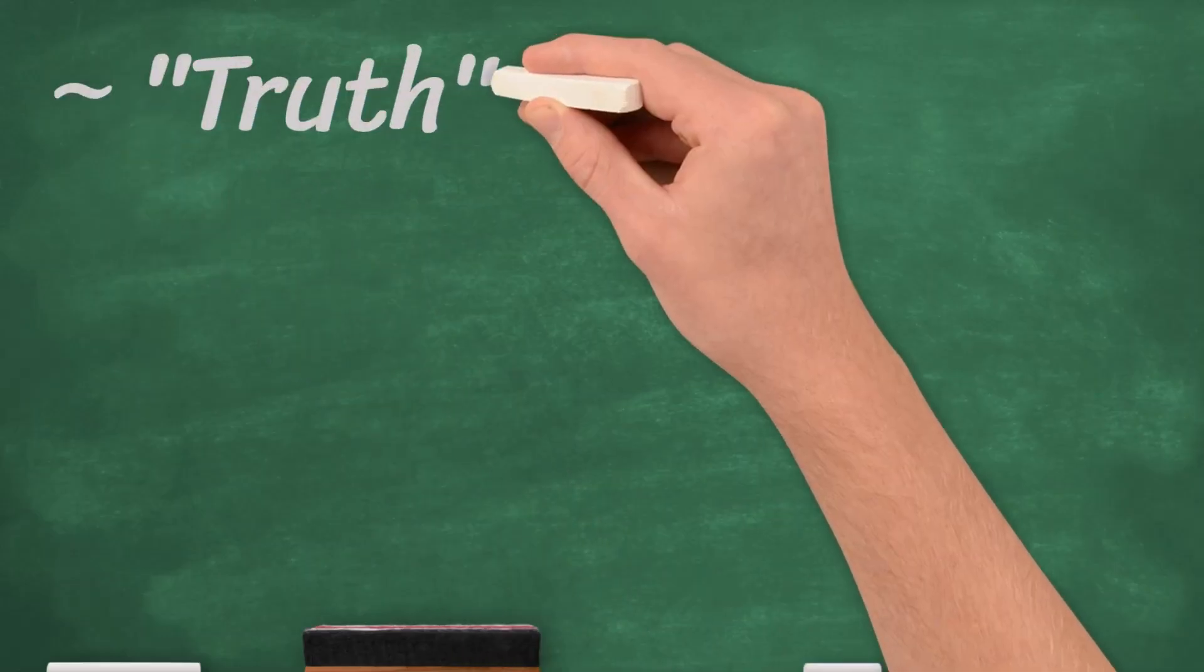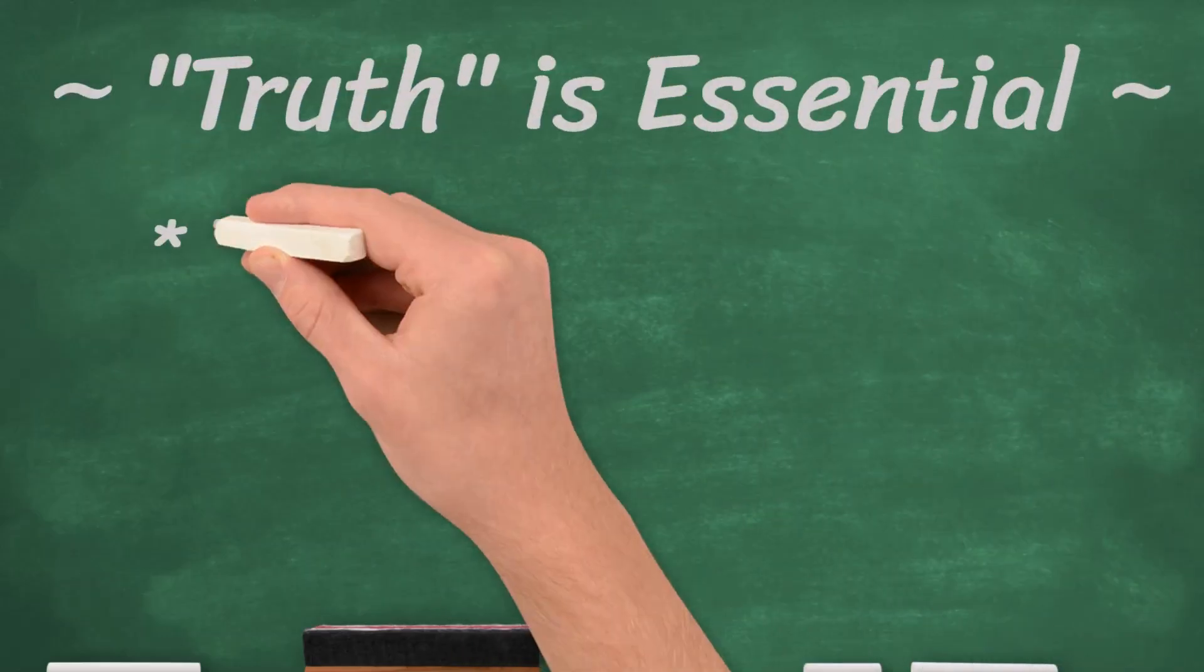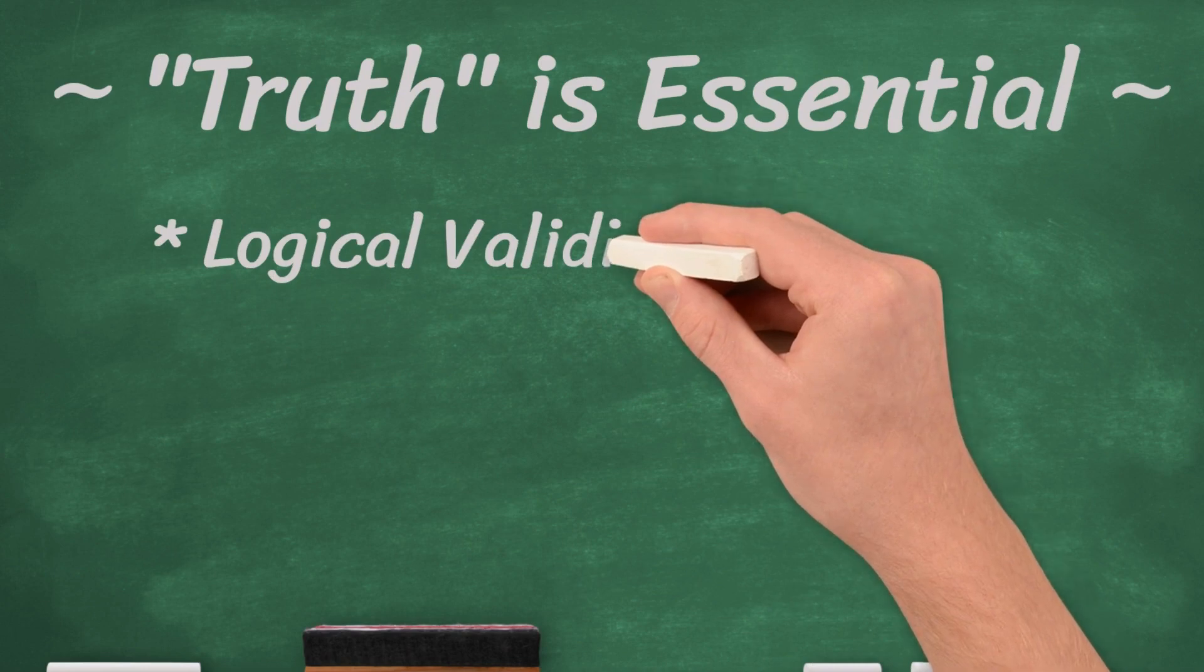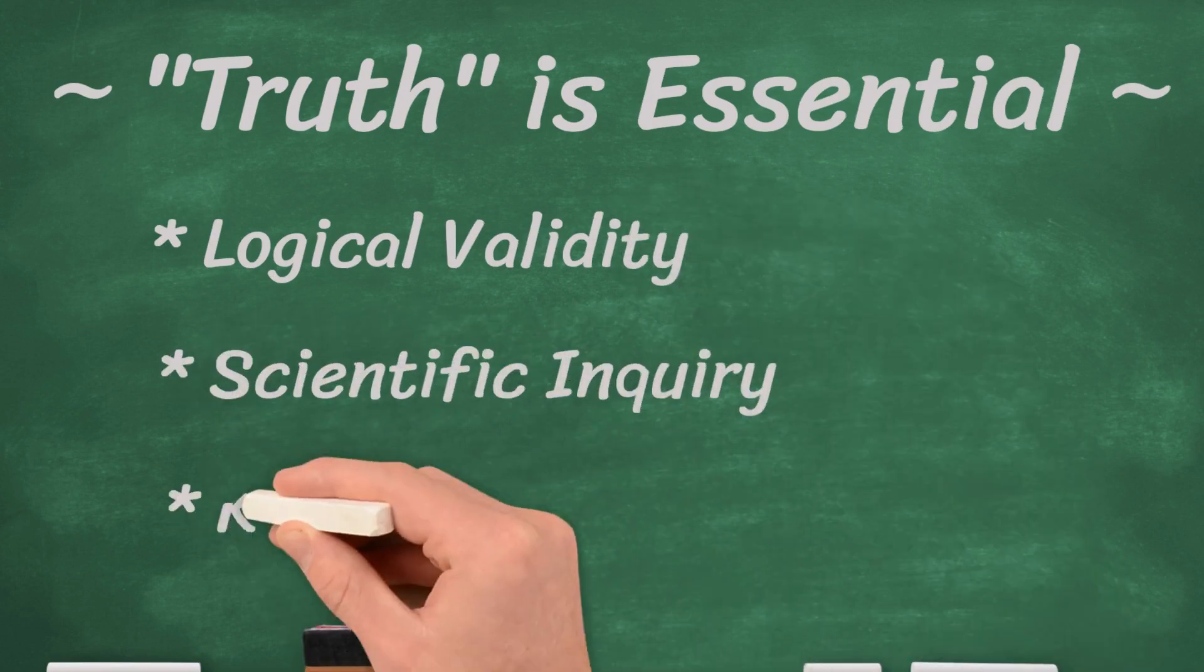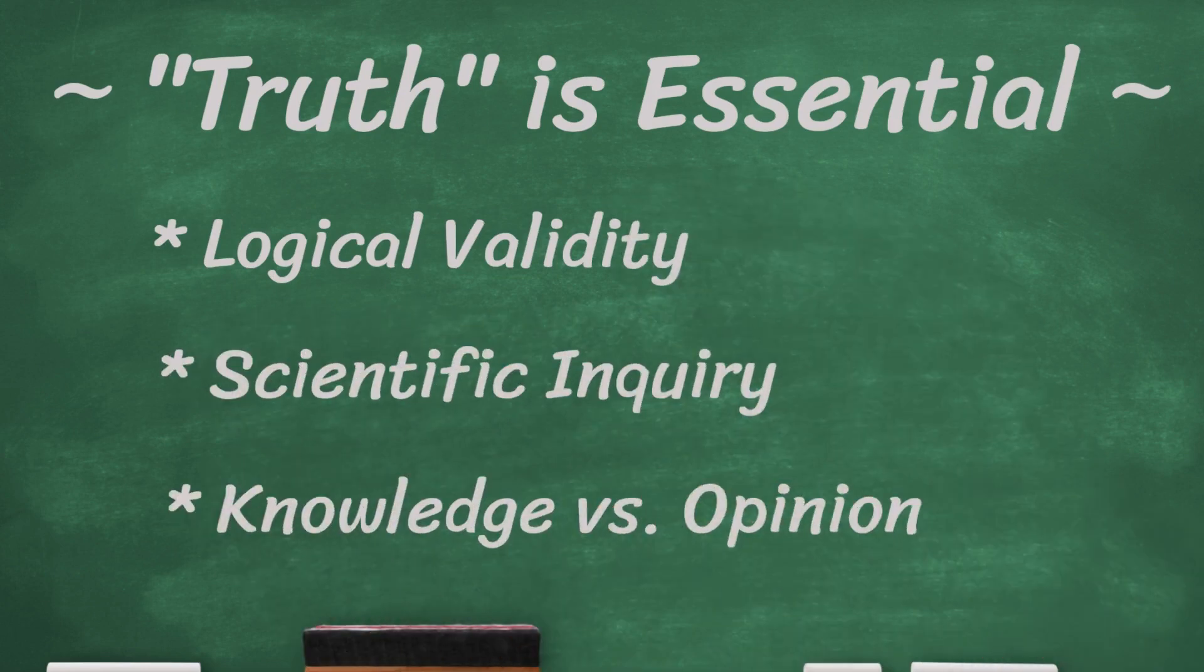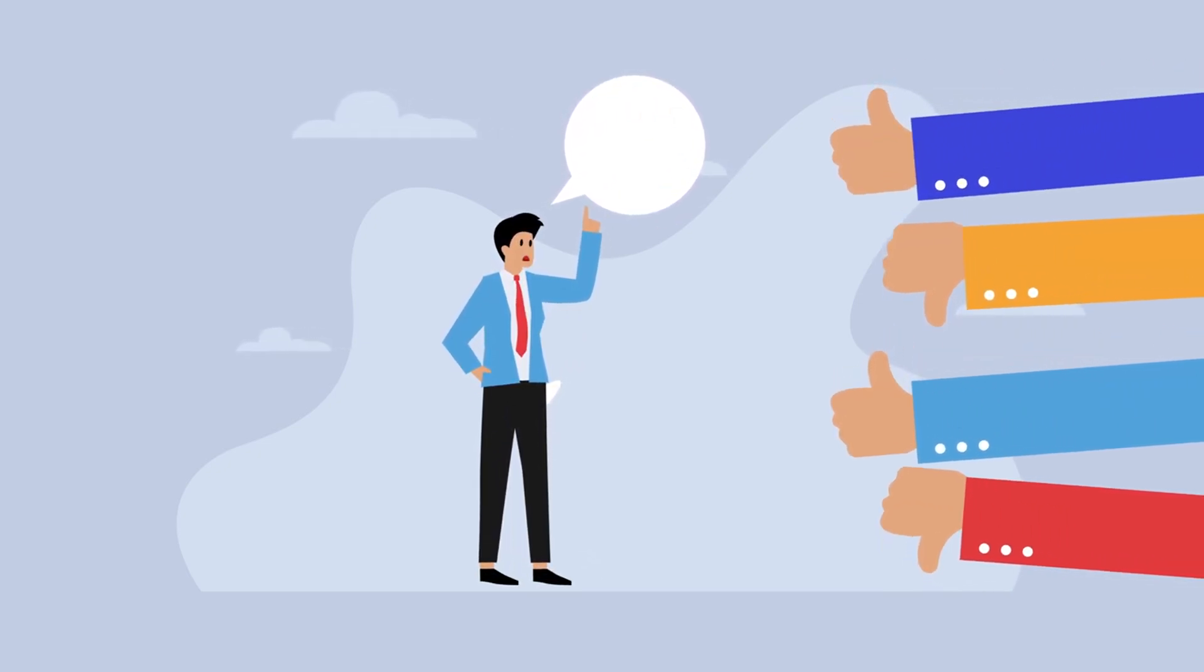Some philosophers argue that the concept of truth is essential in explaining notions like logical validity, the aims of scientific inquiry, and the distinction between knowledge and mere opinion. These critics suggest that the concept of truth holds explanatory value and think that the redundancy theory seems to sacrifice this potential.